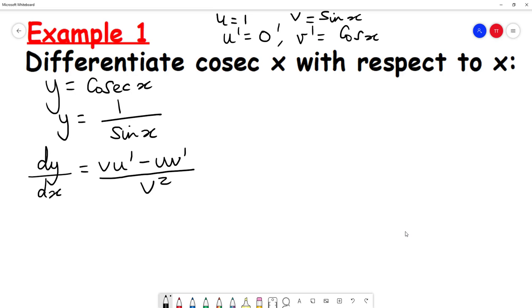Now we can plug these values into our quotient rule. We get sine x times u dash is 0, minus u is 1 times v dash is cosine of x, divided by v squared. In our case, v is sine x, so we get sine squared x.